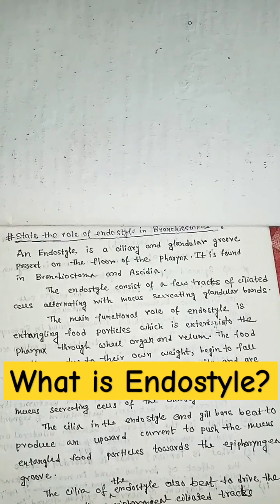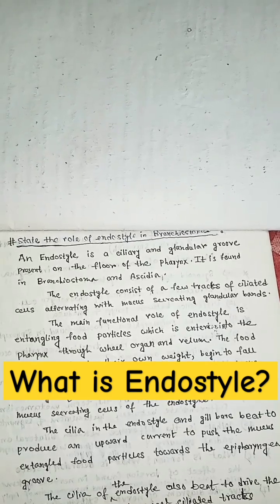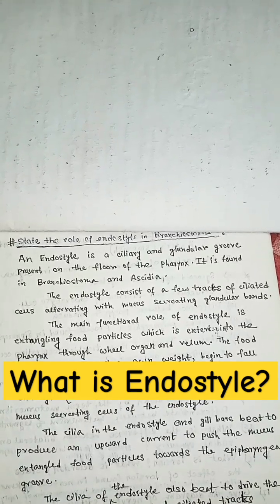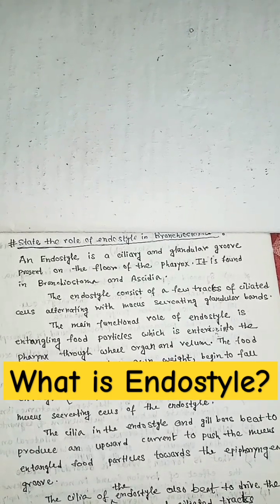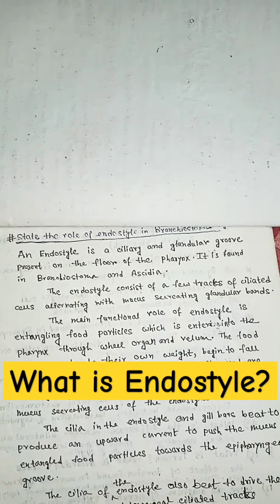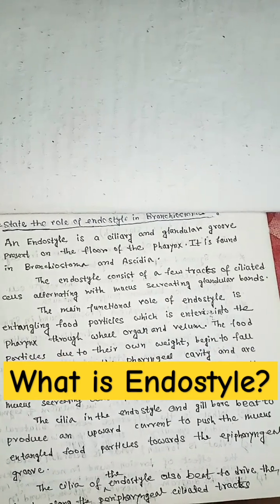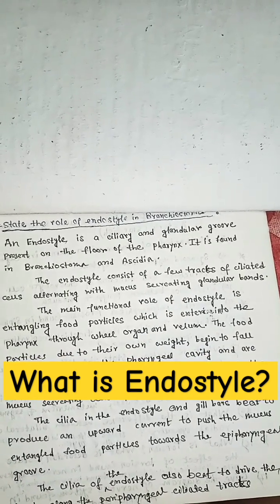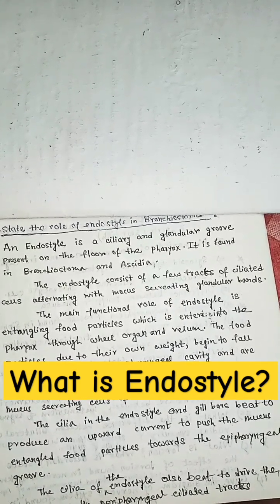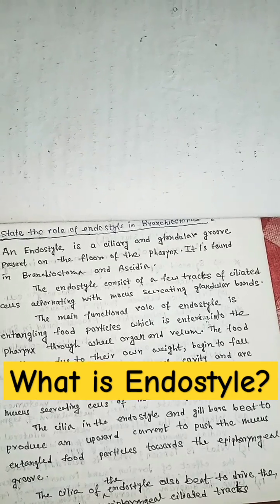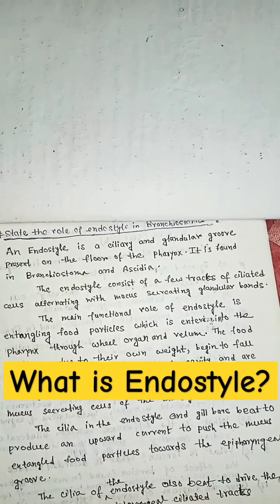The endostyle consists of a few tracts of ciliated cells alternating with mucus secreting glandular bands. The main functional role of endostyle is entangling foot particles which is entering into the pharynx through wheel organ and vellum.